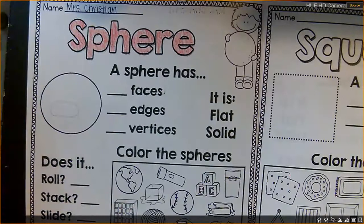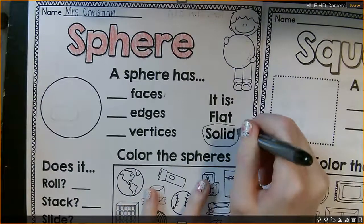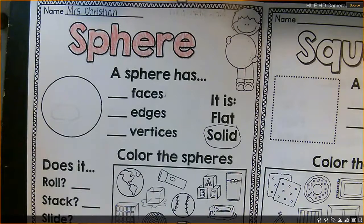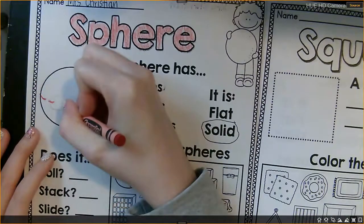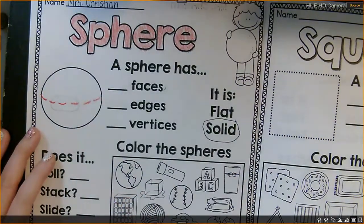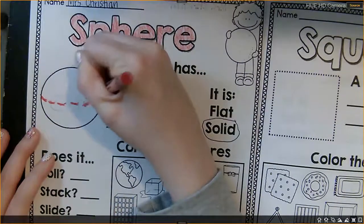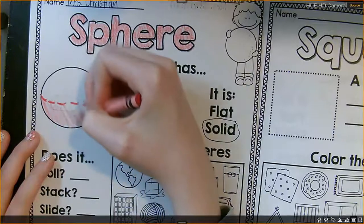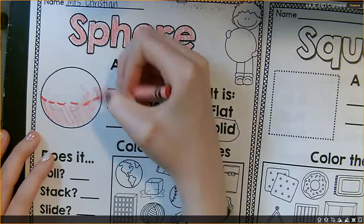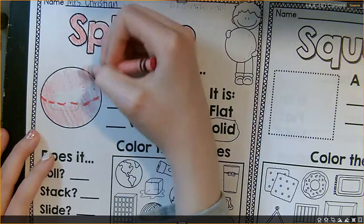And a sphere is a 3D shape. So it is solid. So we're going to circle solid for this 3D shape sphere. And a sphere, when we do this, I'm going to add some lines like this to make it so that we know that it is a solid shape. It's round. It's not flat. And then I'm going to kind of color in that sphere. I made the lines darker and then I'm just shading in the sphere.